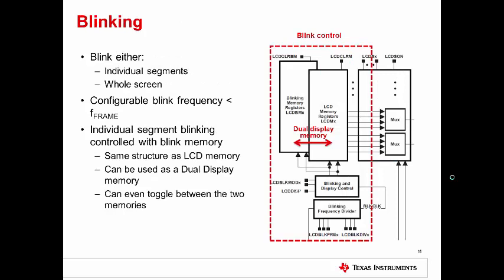Most MSP430 LCD modules support blinking. This can be either blinking individual segments or the entire screen, depending on the LCD module on your device and the muxing being used. The blink frequency is also configurable, but it must be less than the frame frequency. When using individual segment blinking, whether a segment blinks or not is controlled by the blink memory. The structure of blink memory is just like LCD memory. You can also use blink memory as a secondary display memory. The LCD display bit controls which memory is currently being used. You can also use one of the blinking modes to toggle automatically between displaying the two memories. Blinking features supported can vary between LCD modules and can depend on the mux mode being used, so be sure to check your specific device data sheet and user's guide.